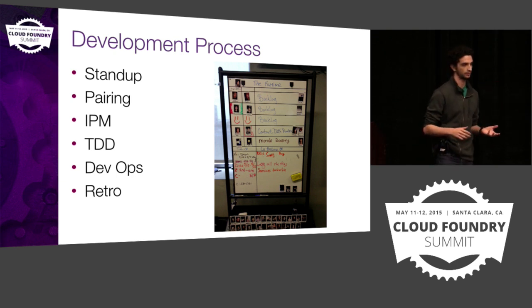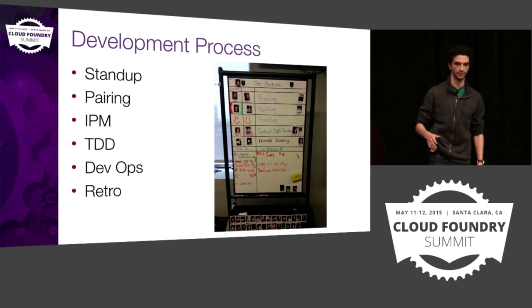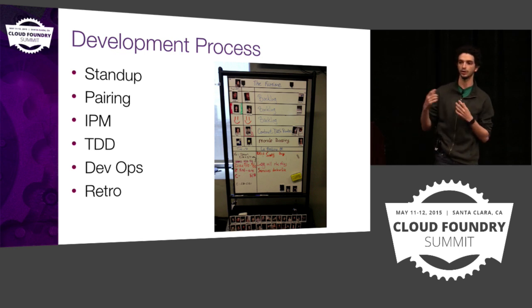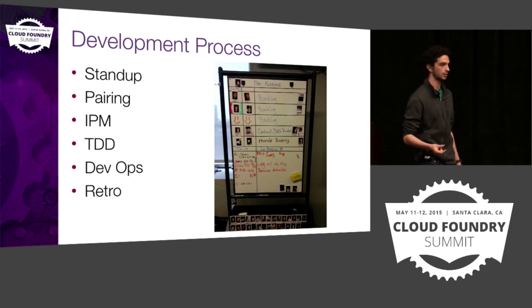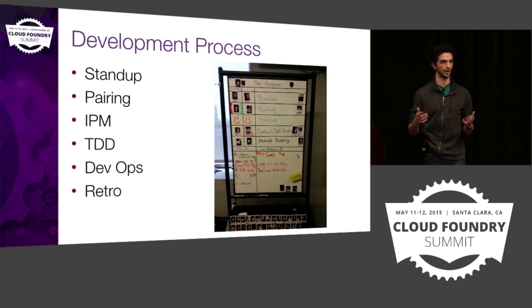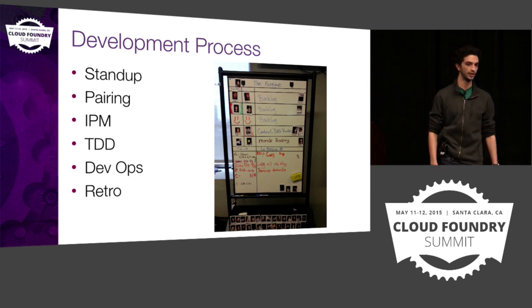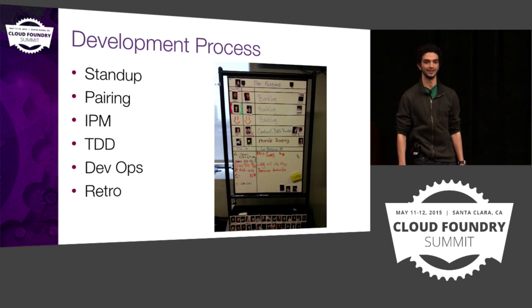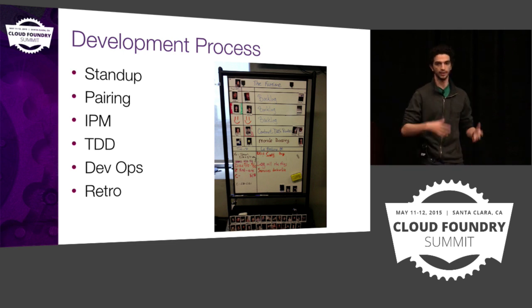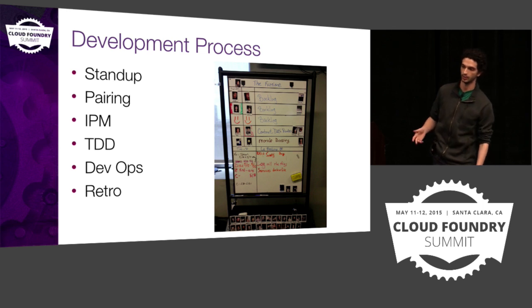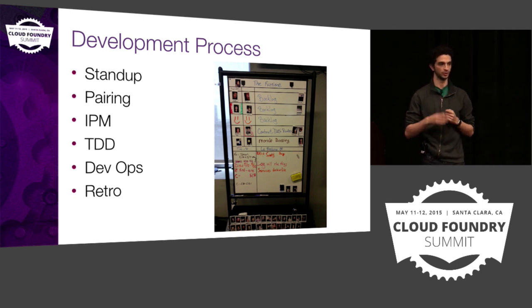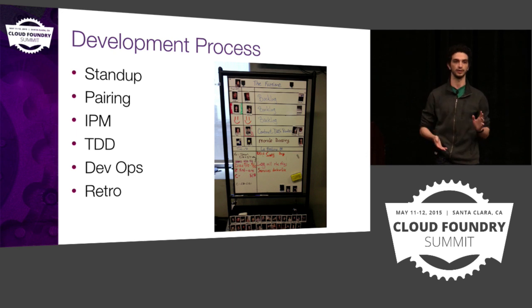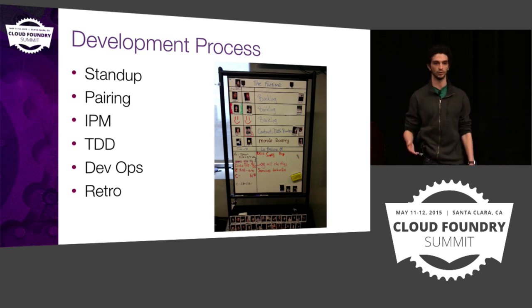IPM is part of our Agile process. We like to iterate very quickly on our code, so we break work down into chunks we call stories and put them in a tool called Pivotal Tracker. If you're contributing to Cloud Foundry, you should be aware of Pivotal Tracker — it's a nifty tool for organizing an Agile project. The idea is we come up with all the things we need to do, and our product manager Yui can organize them into a timeline that makes sense from a product standpoint.